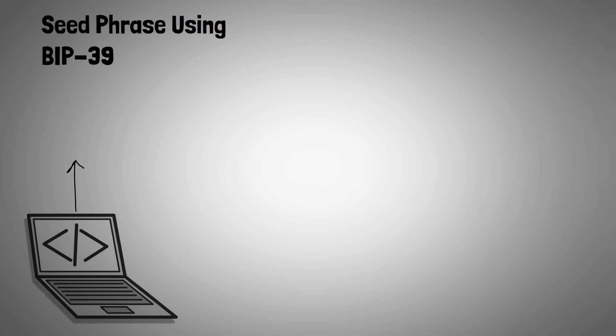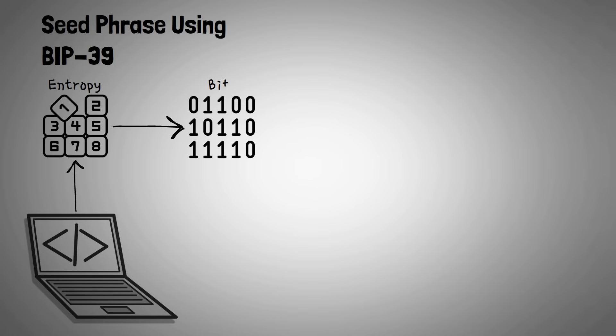To make a seed phrase using BIP39, we typically use wallet software that is set up to do this automatically. The software generates a random set of numbers called entropy. These numbers are then converted to binary ones and zeros, known as bits in computer science.